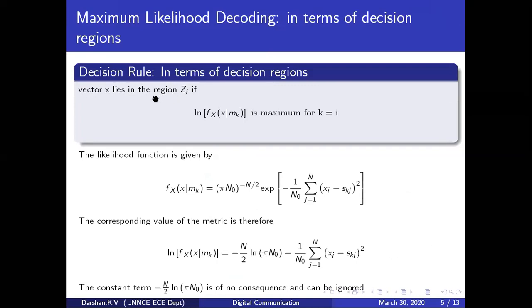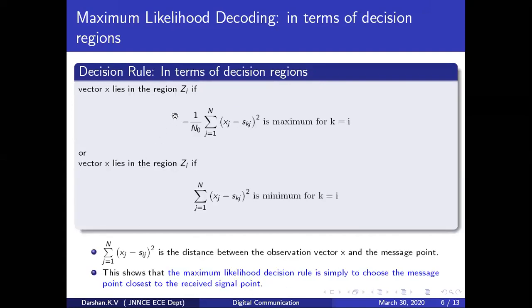Vector X lying in region Z_i means M-cap equals M_i — M_i has been transmitted. The message is told in terms of the region. Region Z_i corresponds to message M_i. The decision is made by computing this metric which is maximum. The decision rule was written with the minus removed and maximum changed to minimum.